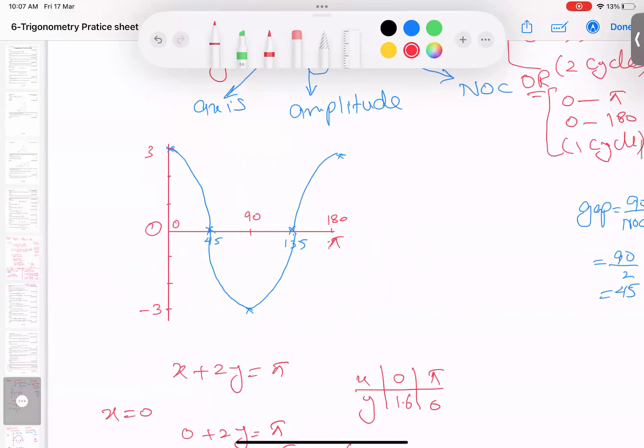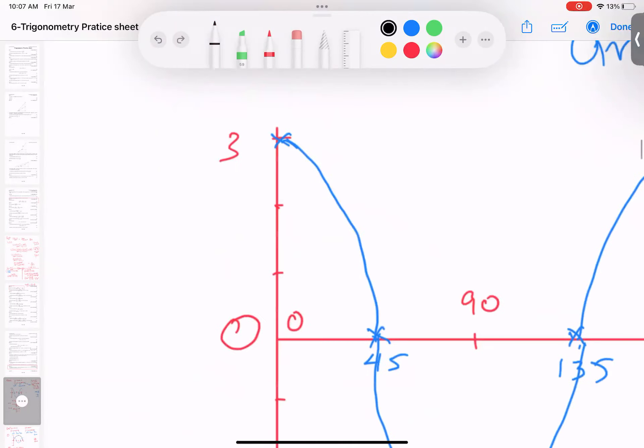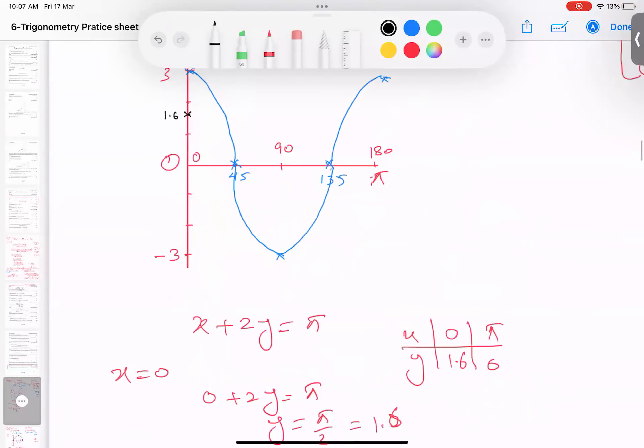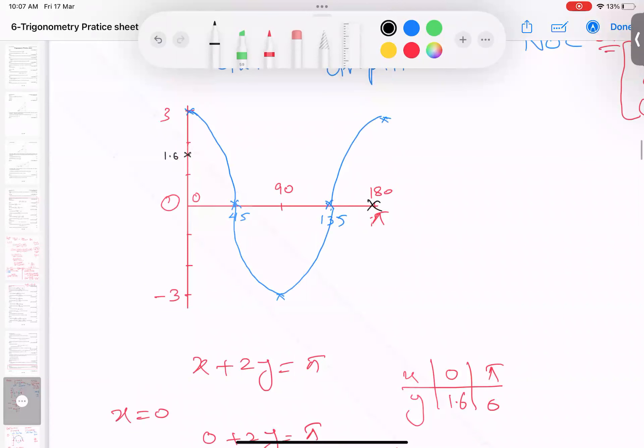Now I'm going to sketch it. So I do sketch in a different color. 0 and 1.6. X is 0 and y is 1.6 is somewhere here. This is 1.6 somewhere here. And other value is what? X is π, y is 0. X is π is here, and y is 0 here. It means this point. Now I'll take a scale and sketch it.